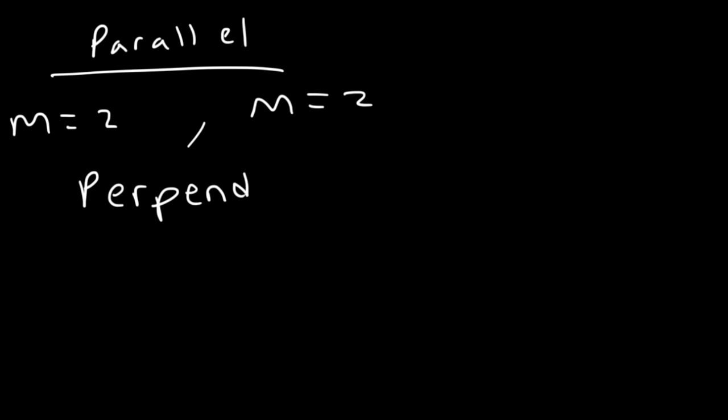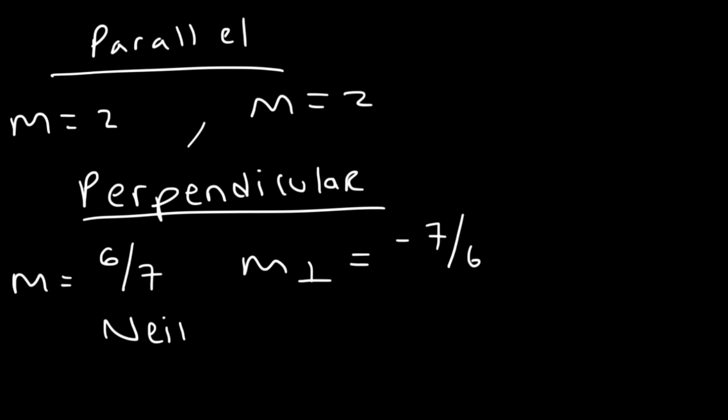So just to review, parallel lines have the same slope. Perpendicular lines have slopes that are negative reciprocals of each other. So the first slope is, let's say, 6 over 7. The other one is going to be negative 7 over 6. And if it's not one of these two, then it's neither.